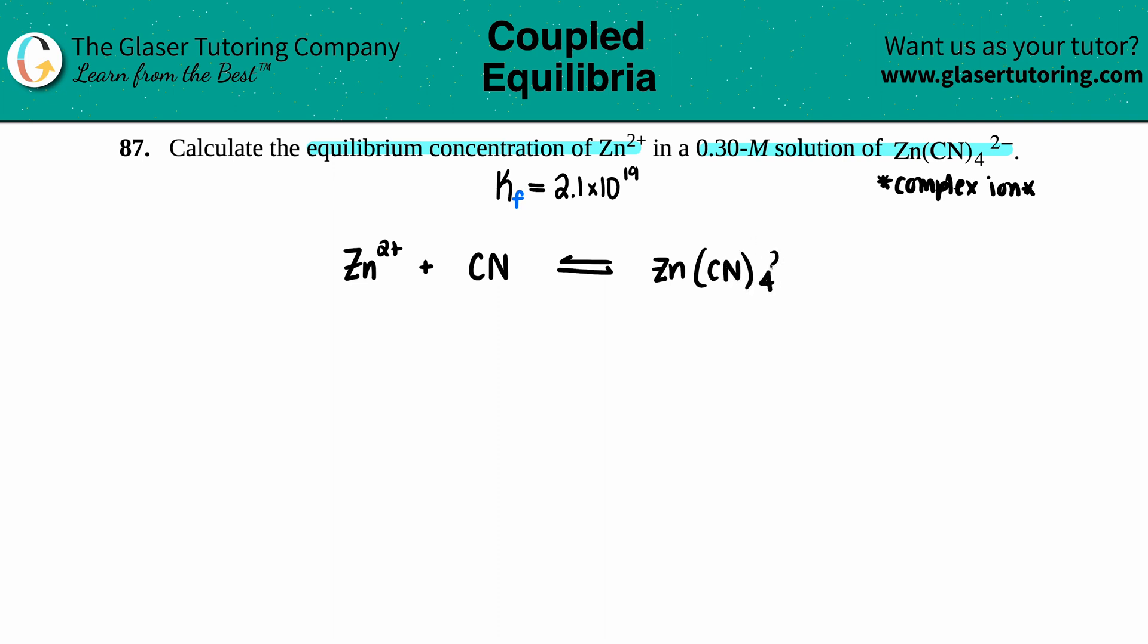The charge for cyanide, you can memorize it or backtrack to see what it would be. Cyanide is a negative one charge, and since they all have charges, they all are going to be aqueous, which means they will all be in the Kf expression.